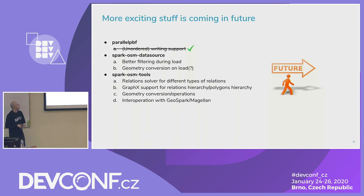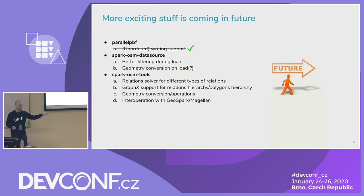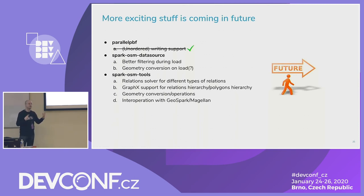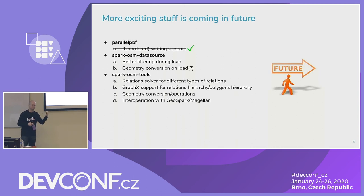For the Spark OSM tools library, it needs to be more useful. Relations need to be solved properly. GraphX support should be added — since everyone uses GraphX for graphs and I'm just using a table. Geometry functions need to be there, including conversion between geometry and OSM and to well-known binary, so GeoSpark and Magellan can interoperate with it. Those are the long-standing plans — I'll probably finish some of them.